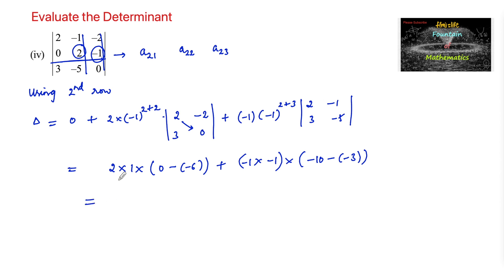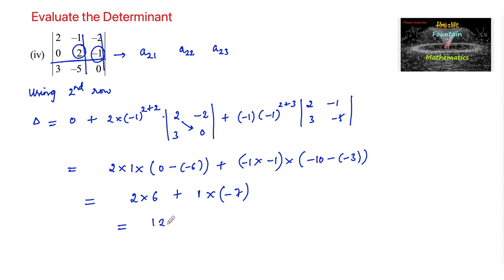This gives 2 × 1 × (0 + 6) plus (−1)(−1) × (−10 + 3), which equals 2 × 6 + 1 × (−7), giving 12 − 7 = 5. So the determinant value is 5.